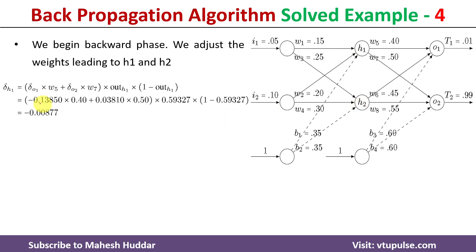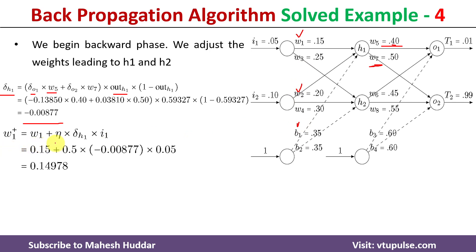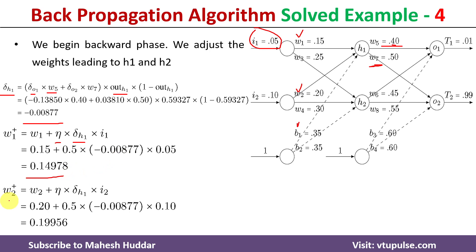The next step is to update weights for the hidden layer neurons, so we need the error at h1 and h2. The formula is: δ_h1 = (δ_o1·w5 + δ_o2·w7) · out_h1 · (1 − out_h1). Substituting all known values, we get δ_h1 = −0.00877. We then update: w1 = w1 + η·δ_h1·i1 = 0.14978, and similarly compute updated w2 and b1.